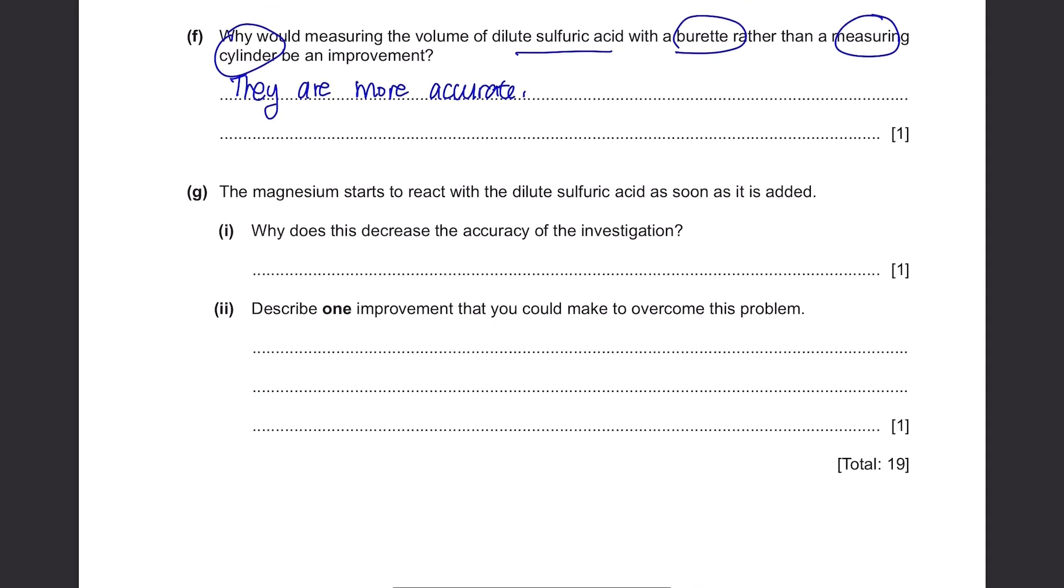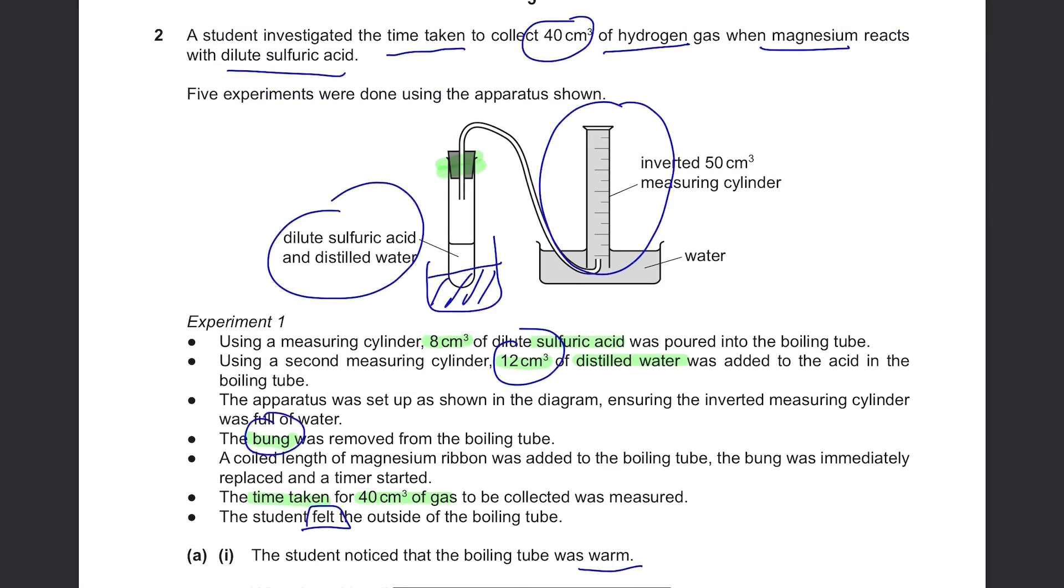The magnesium starts to react with the dilute sulfuric acid as soon as it is added. Why does this decrease the accuracy of the investigation? We need to go back to the method. You remove the bung, and then you put the ribbon, and then you put back the bung. Well, maybe this might be just a few seconds. But right after you put the magnesium ribbon inside, you're not gonna close the bung immediately. And there will be this gap between them. And hydrogen gas may escape during this gap. So it's not that accurate. So your answer would be that gas can escape or not all gas is collected. Because you need to put in the bung first.